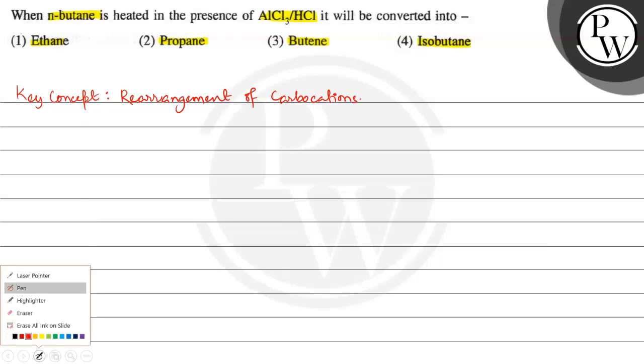Alright, so here we have n-butane presented, which is like this: CH3-CH2-CH2-CH3. So we can represent this CH2 as CH2H.